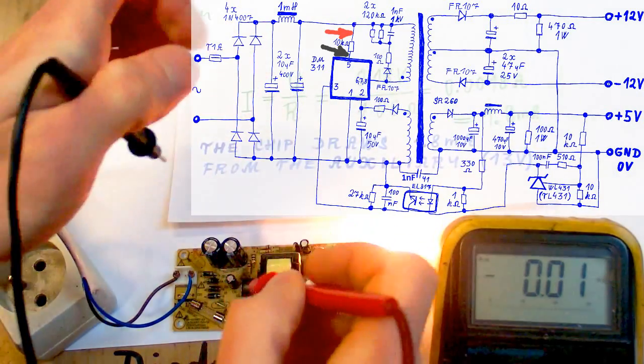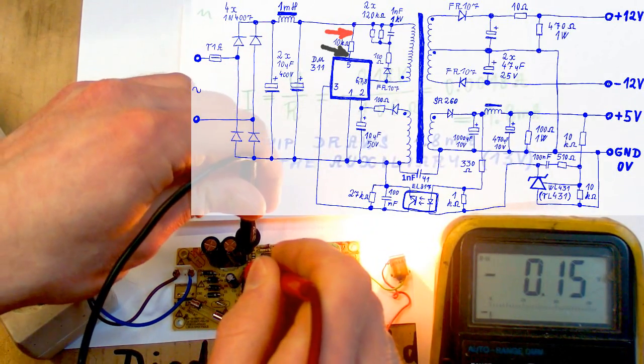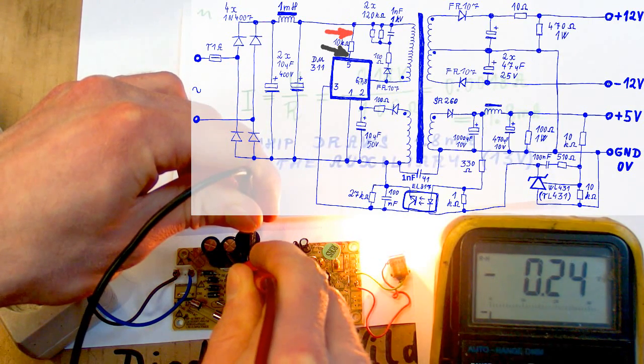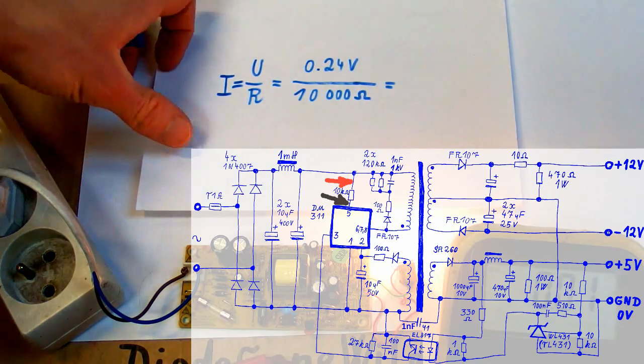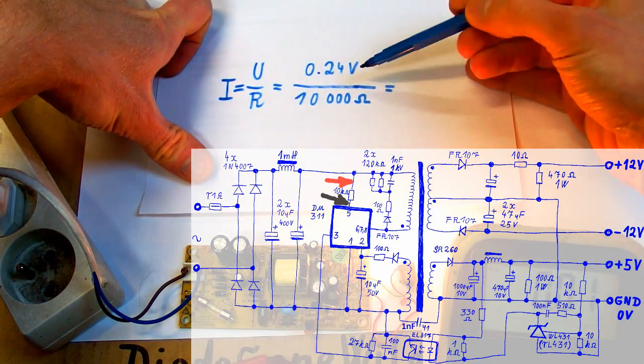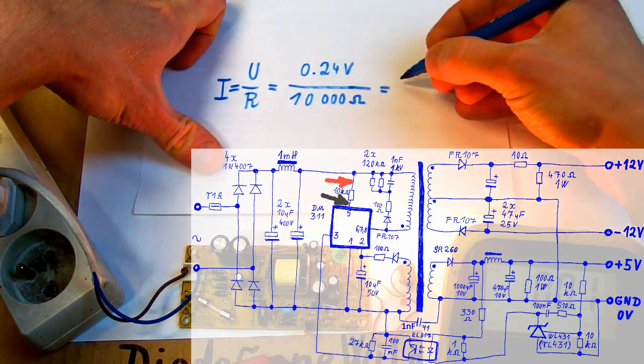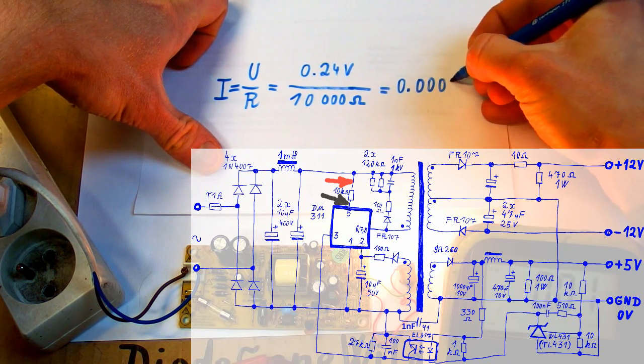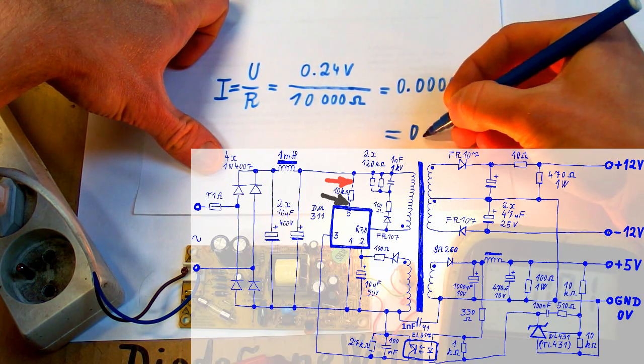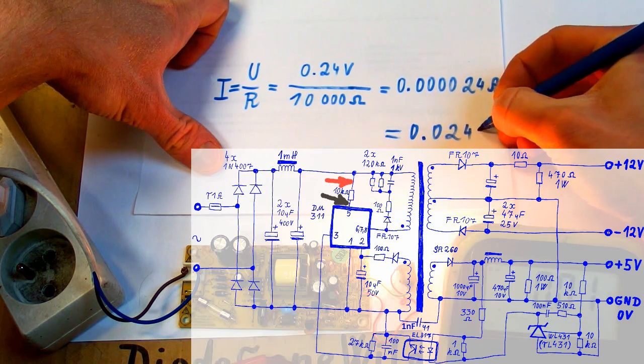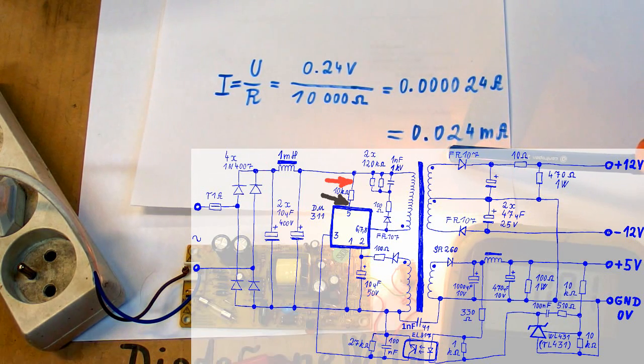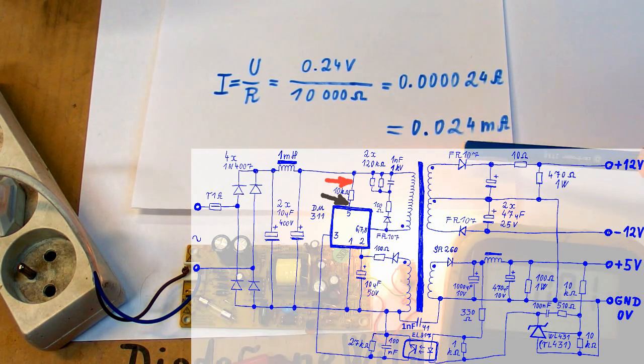Now what is the voltage on the startup resistor? And this one shouldn't be active now. It is just for startup, 0.24 volts. It's a 10 kilo ohm resistor, which equals 10,000 ohms, because you have to put the resistance in ohms and the voltage in volts into the formula. So it is 0.000024 amps and this is 0.024 milliamps. This is just a very small current, so the startup pin is not active now and this is just a leakage current.